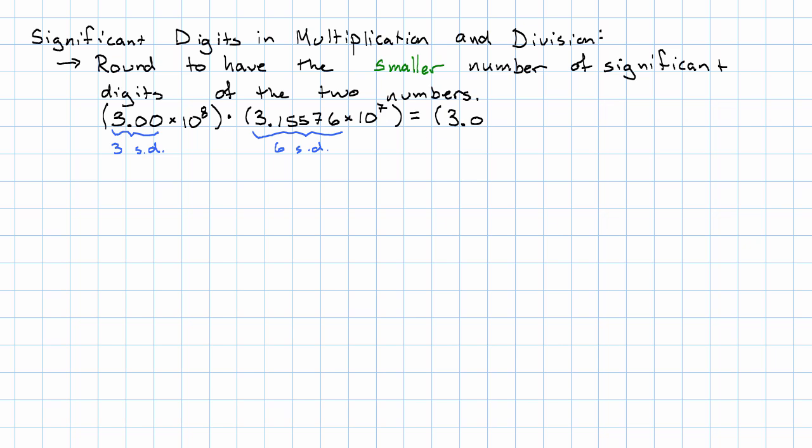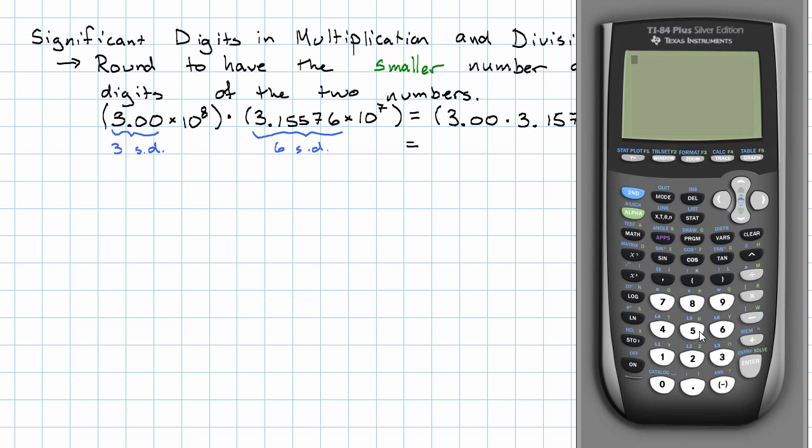We'll have 3.00 times 3.15576, and then that's going to be times 10⁸⁺⁷. I'm going to use the calculator for that decimal multiplication because that doesn't look like much fun. I've got 3.00 times 3.15576.